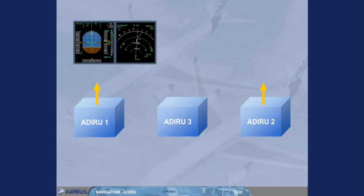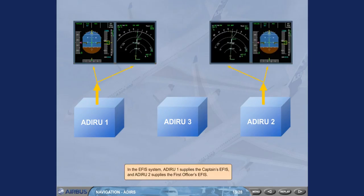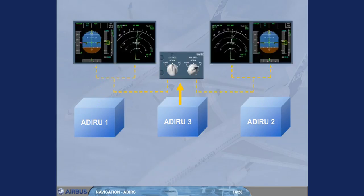In the EFIS system, ADR 1 supplies the captain's EFIS and ADR 2 supplies the first officer's EFIS. ADR 3 is available as a backup to either EFIS system via the switching panel.